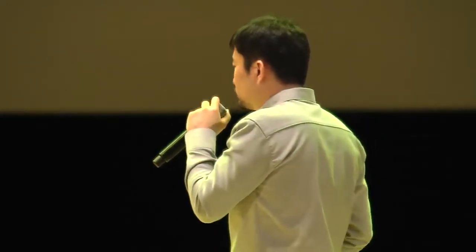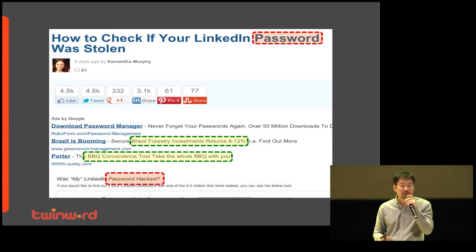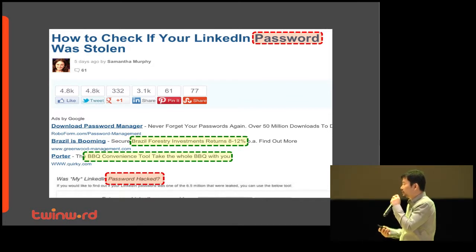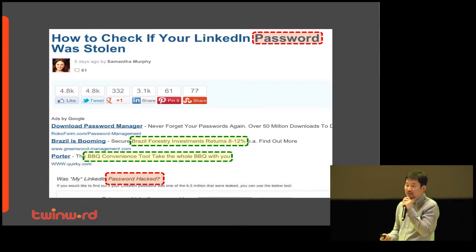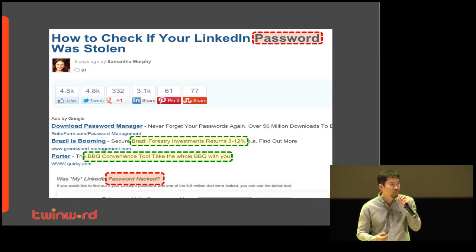So where to use this word graph? Many people say contextual advertising is not good. Word graph can improve this kind of job. I'll give you one example. The topic of this blog is computer security, but Brazil investment and BBQ tool are listed. If we are sure about the topic of this blog, we will remove unrelated advertisements.